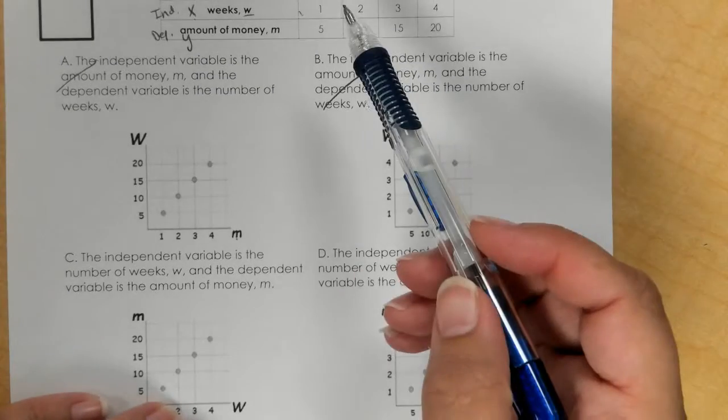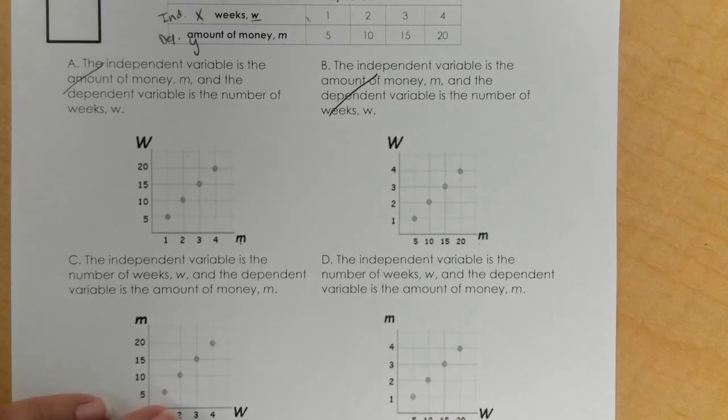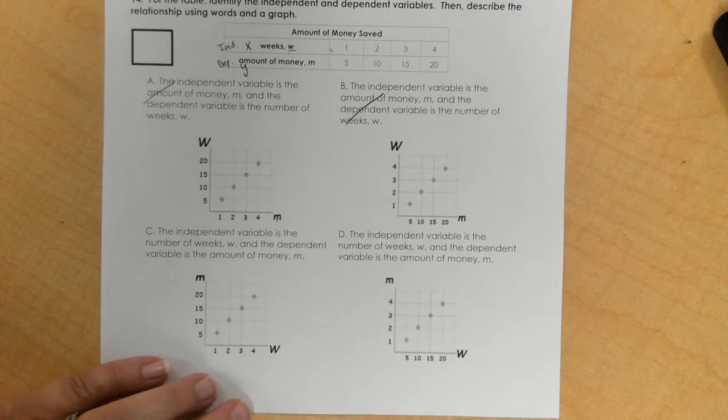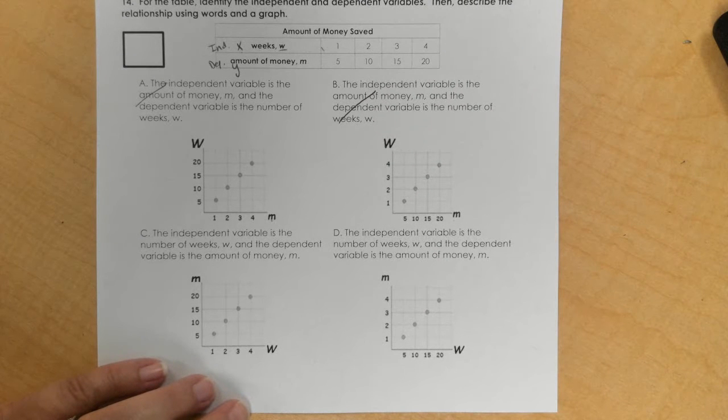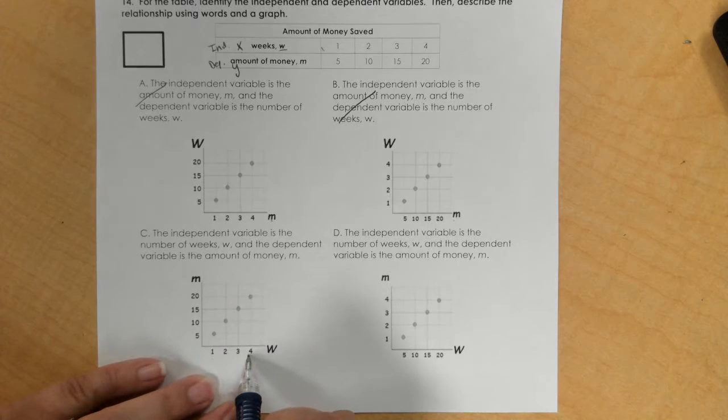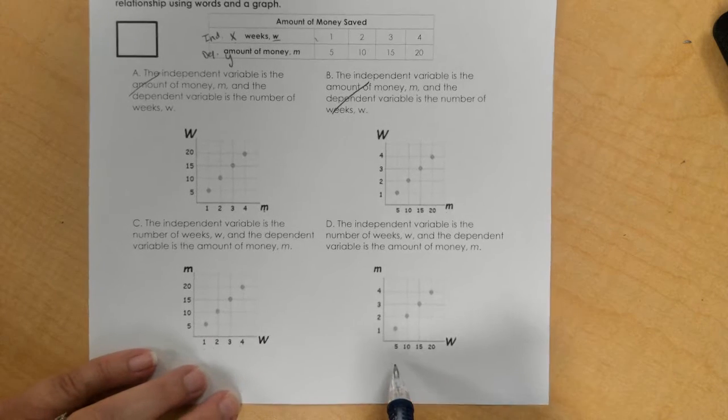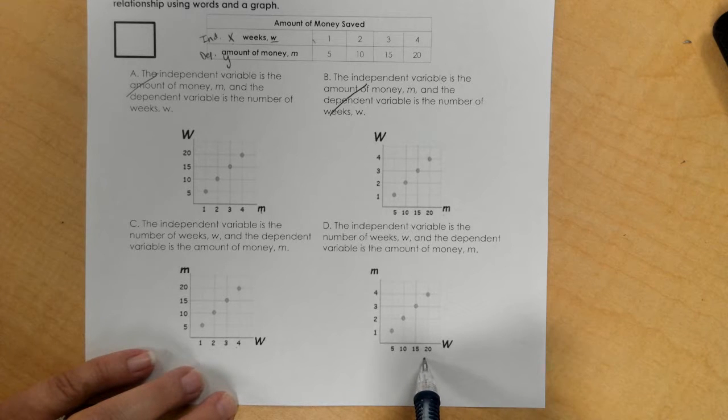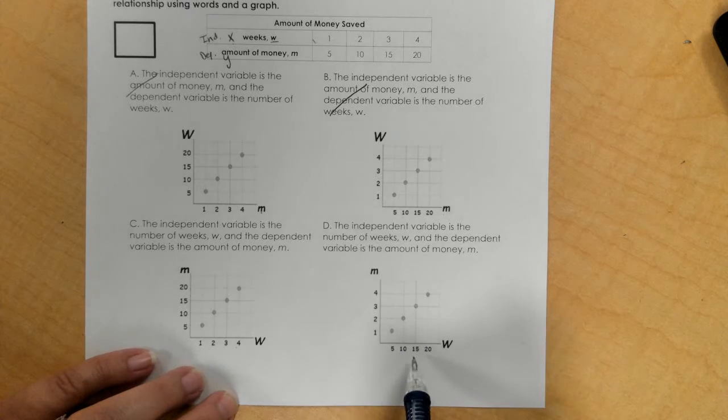I have to check our numbers. For weeks on the x, we should be labeling 1, 2, 3, 4. That looks good. Here they labeled 5, 10, 15, 20. That has to do with your y, or your money. That's not going to work out.